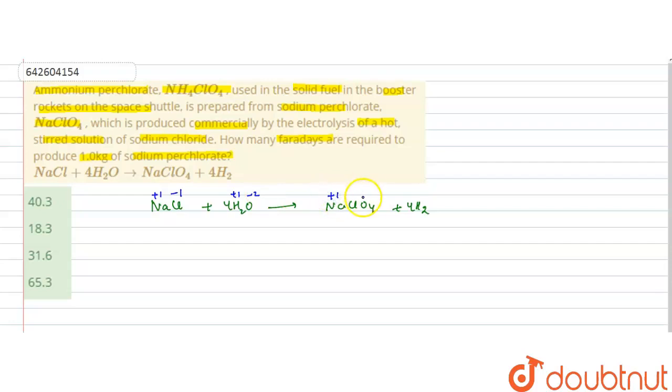Same sodium will be in plus one, oxygen in minus two, and chlorine will be in plus seven. And hydrogen is in zero oxidation state. So the maximum change in oxidation state is of chlorine.